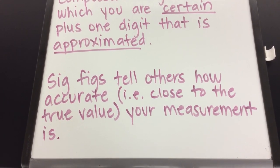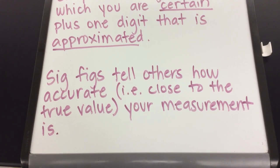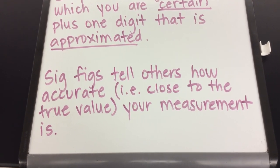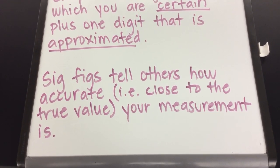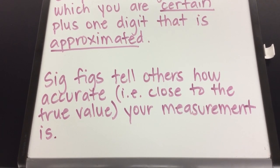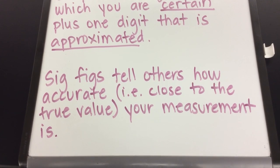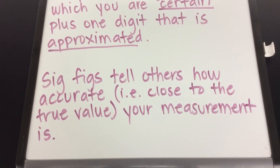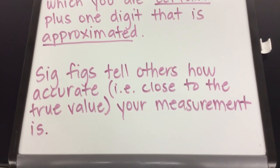There is a true value and then there is a measured value. Any measurement is going to have some error associated with it. So the more accurate our measurement is, that means the closer it is to the true value. So significant figures communicate to others how accurately we make our measurements. Let's look at several examples using volume and mass.